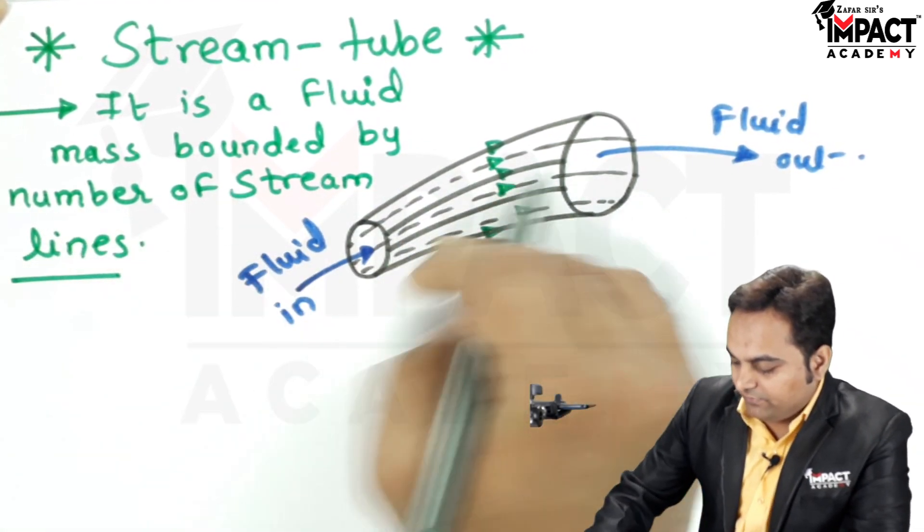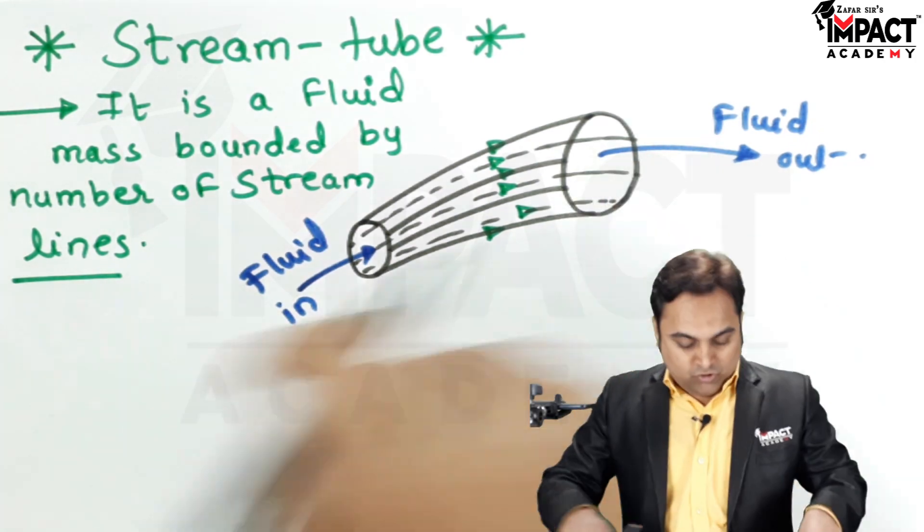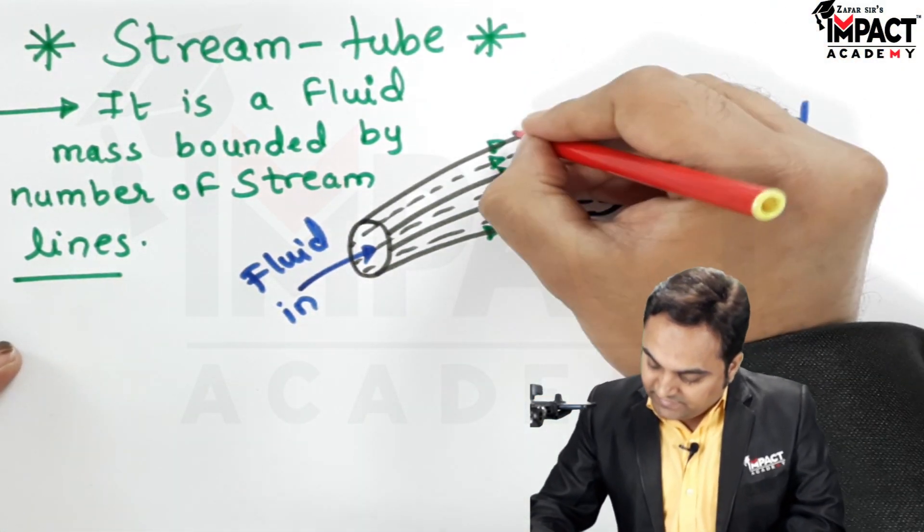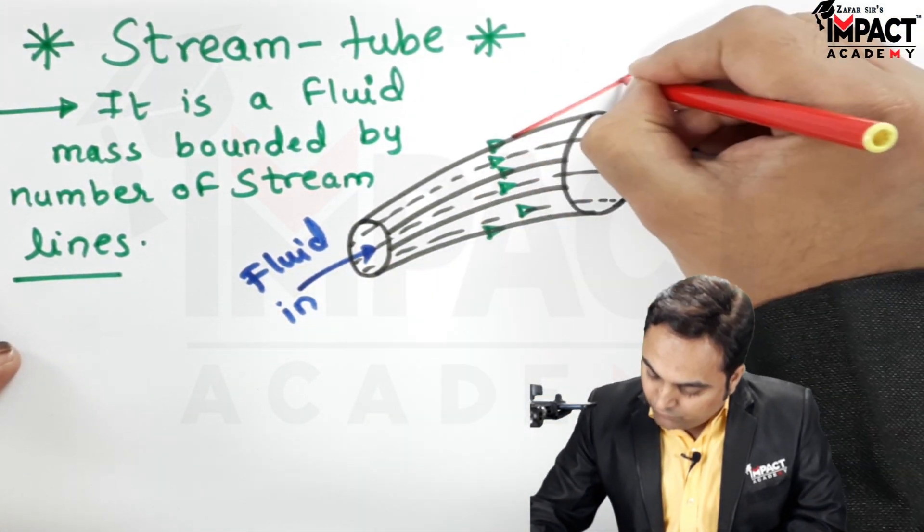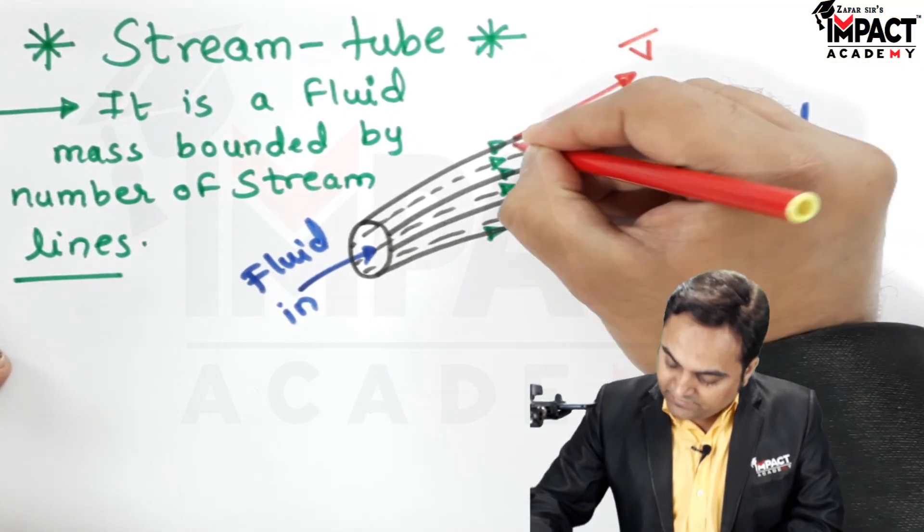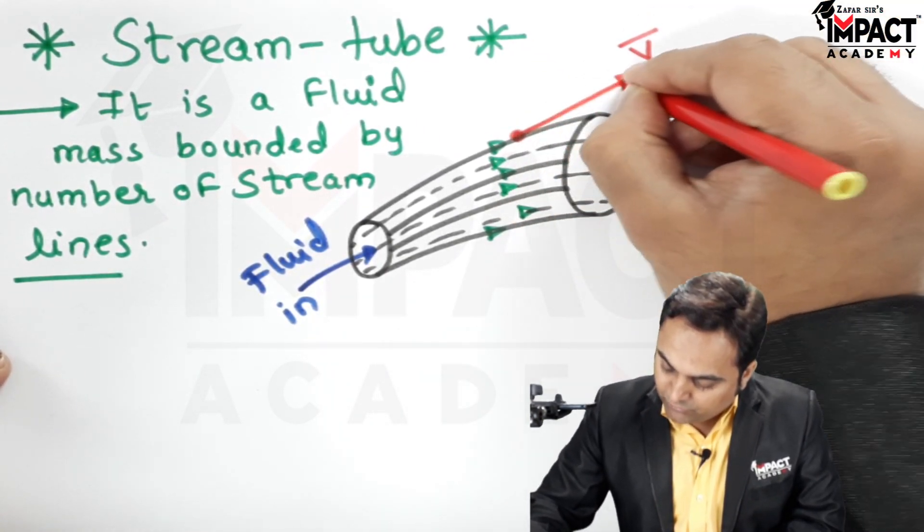Streamlines are those lines in a flowing fluid on which if we take a tangent along the direction of flow we are going to get the velocity at that particular point at that particular instant.